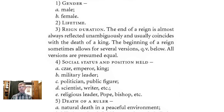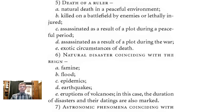In historical chronicles, these could be kings, emperors, military leaders, politicians, public figures, religious leaders, bishops. The next item is death of a ruler. We need to carefully investigate the details: natural death in a peaceful environment, killed on a battlefield, or assassinated as a result of a plot. It is highly desirable to include exotic circumstances of death in this form. It is essential to study major natural disasters, if they are described — famine, floods, epidemics, earthquakes, eruptions of volcanoes — and include them in the form, noting in what year these events occurred.